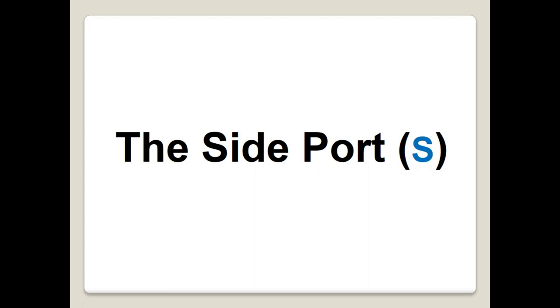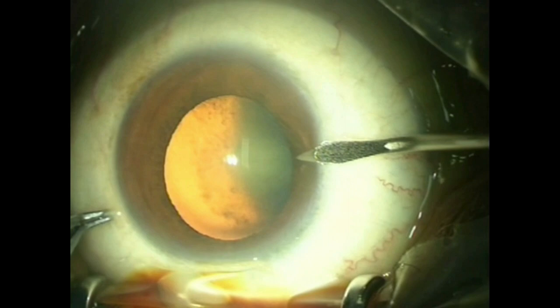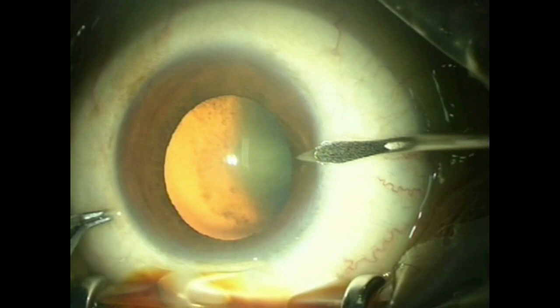What about the sideport incisions? They provide an access route for the secondary instrument and for intracameral injection. Place the sideports in a comfortable position for bimanual handling. The proper size of the sideports should be 1 mm. During creation of the sideports, keep aqueous from escaping out of the anterior chamber to maintain a pressurized globe; otherwise, inject viscoelastic.